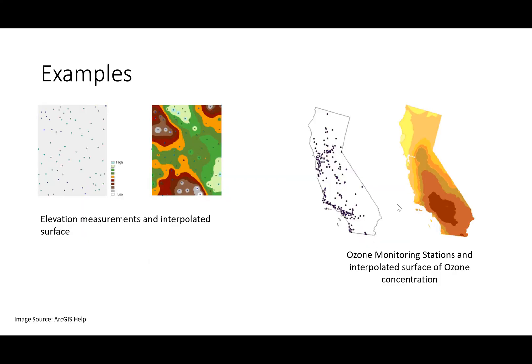Here are two examples. On the left you see blue dots — these are points where we have elevation values, and we use those observations to create a continuous surface or raster. On the right you see ozone monitoring stations, and the values at these points are used to create a surface.